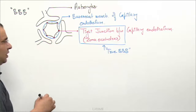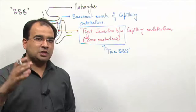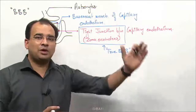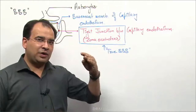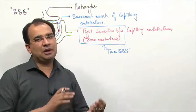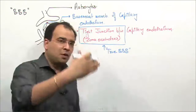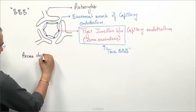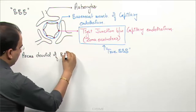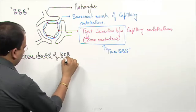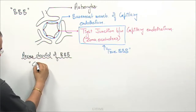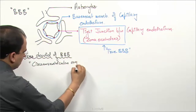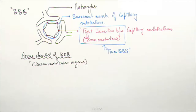There are certain regions in the body which are devoid of the blood brain barrier. The regions devoid of the blood brain barrier can be enumerated in one word: circumventricular organs. They are present in the periphery of the third ventricle or the fourth ventricle. That is why we call them circumventricular organs.